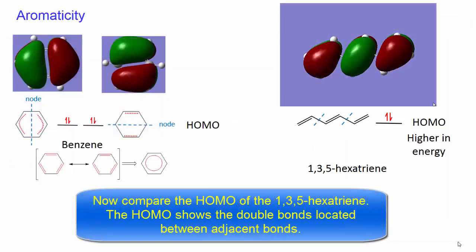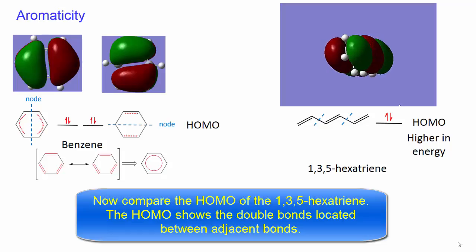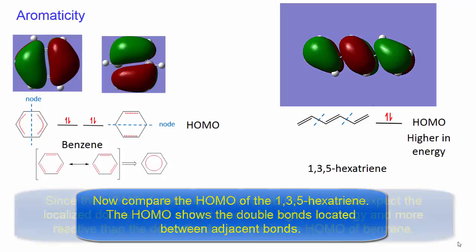Now compare the highest occupied molecular orbital of 1,3,5-hexatriene. The HOMO shows the double bonds located between adjacent bonds.